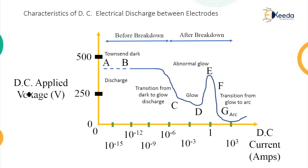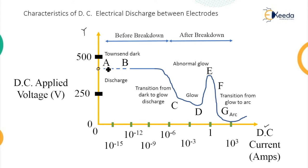The post breakdown phenomenon is understood using a V-I characteristic chart, plotted with DC applied voltage on the y-axis and DC current between the electrodes on the x-axis. The voltage range is 0 to 500 volts, and the current ranges from 10⁻¹⁵ A to 10³ A (1 kilo ampere). When a high supply voltage is applied, Townsend's breakdown takes place in the dark — the discharge is represented from A to B with a dotted line.